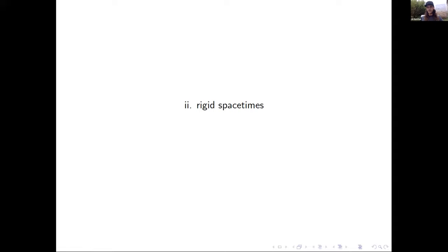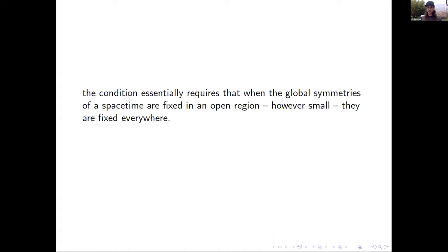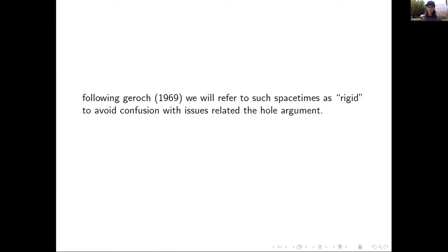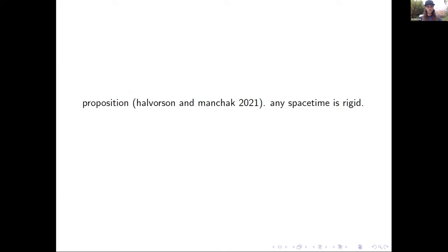Let's now consider the hierarchy, starting at the bottom. The weakest condition in the symmetry hierarchy draws on the hole construction just considered. The condition essentially requires that when the global symmetries of spacetime are fixed in an open region, however small, then they're fixed everywhere. Following Geroch, we'll refer to these spacetimes as rigid to avoid confusion with the hole argument. We say a spacetime is rigid if for any open set and any isometry, if ψ is the identity on the open set, then it's the identity everywhere. Every spacetime is rigid.